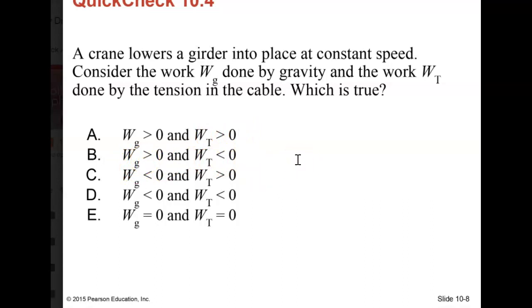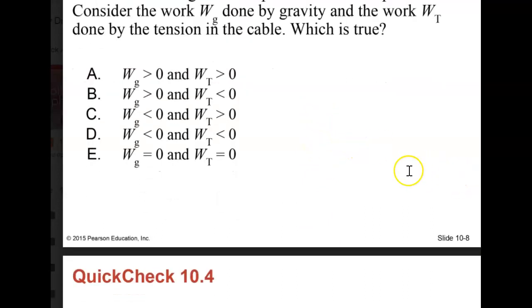All right, we talked about this last year. The cable is being lowered. Gravity is pulling down in the same direction as the observed displacement, so the work done by gravity is positive. The steel beam or girder is being lowered at constant speed. The cable is pulling up. The displacement down and the force in the cable up are in opposite directions, making that work negative.